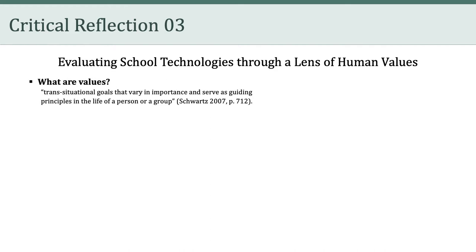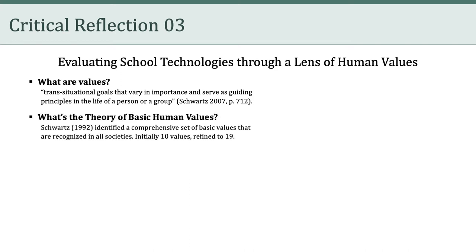One way values have been defined is as trans-situational goals that vary in importance and serve as guiding principles in the life of a person or a group. In fact, in 1992, Professor Shalom Schwartz from Hebrew University created the now-famous Theory of Basic Human Values. According to Schwartz, his goal was to identify a comprehensive set of values that are recognized in all societies.